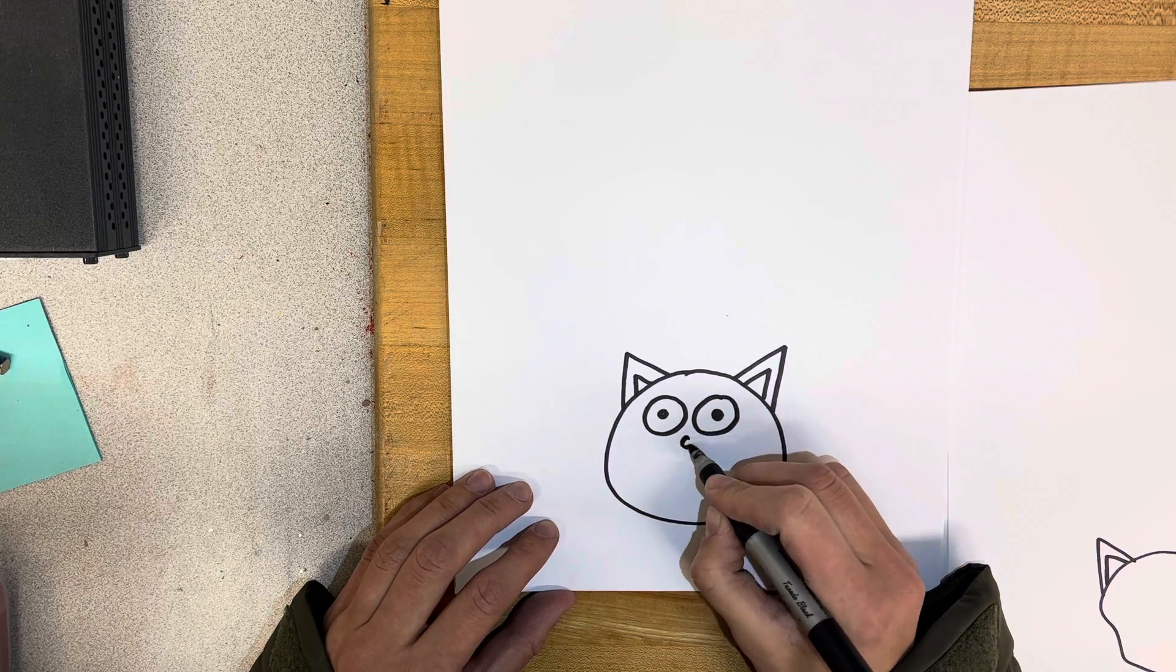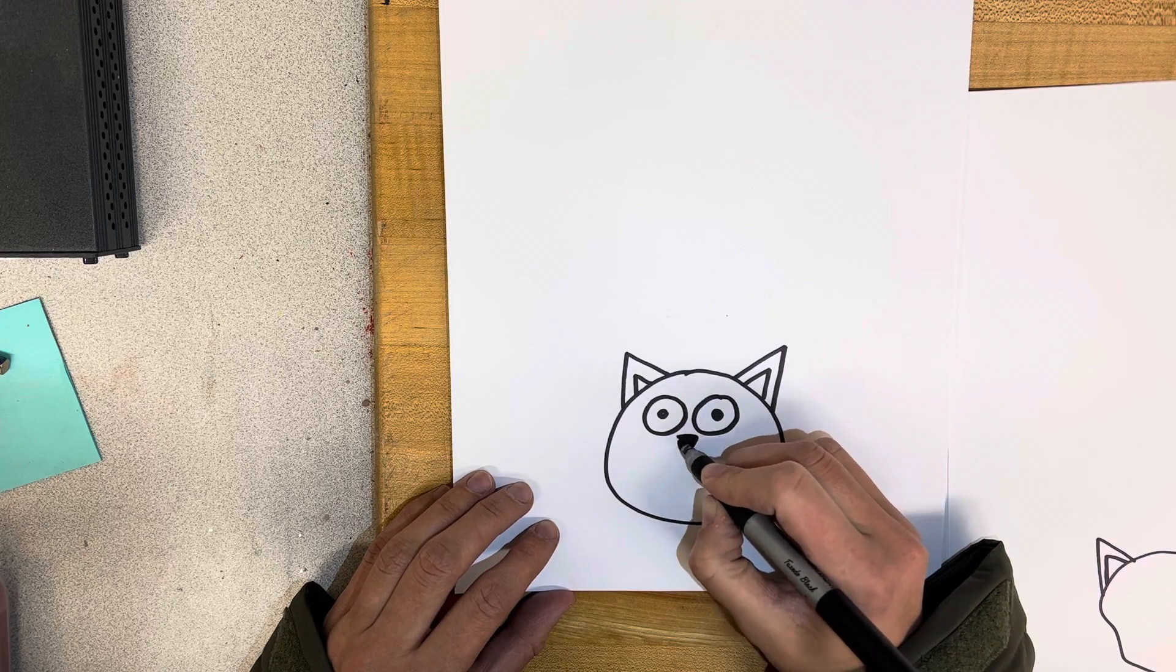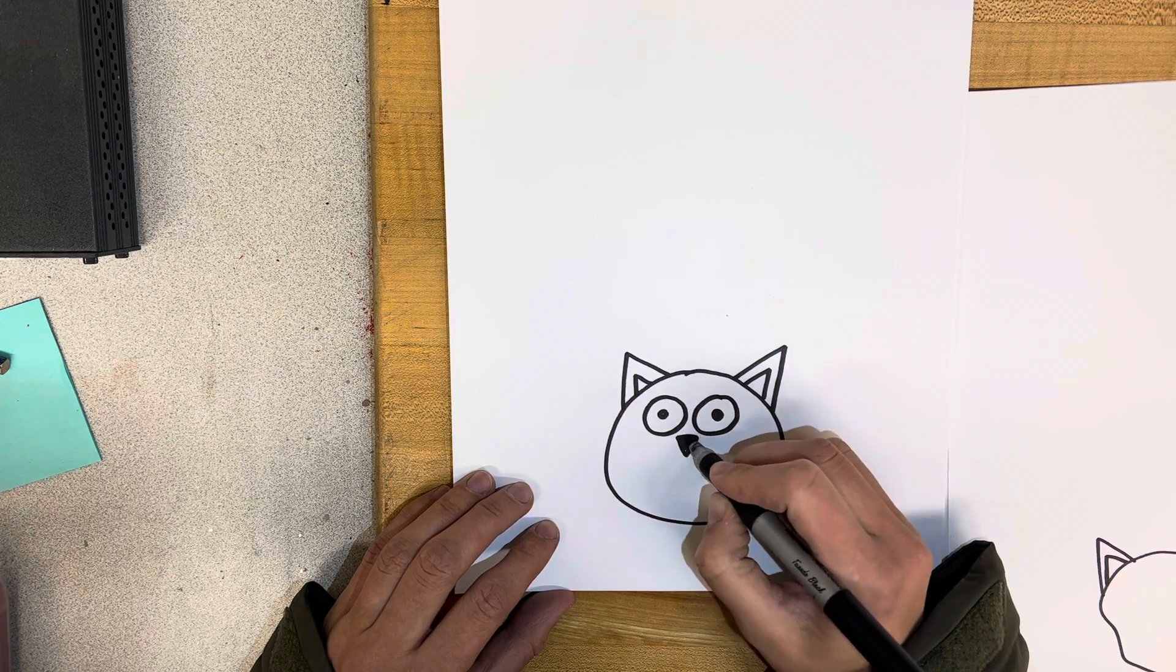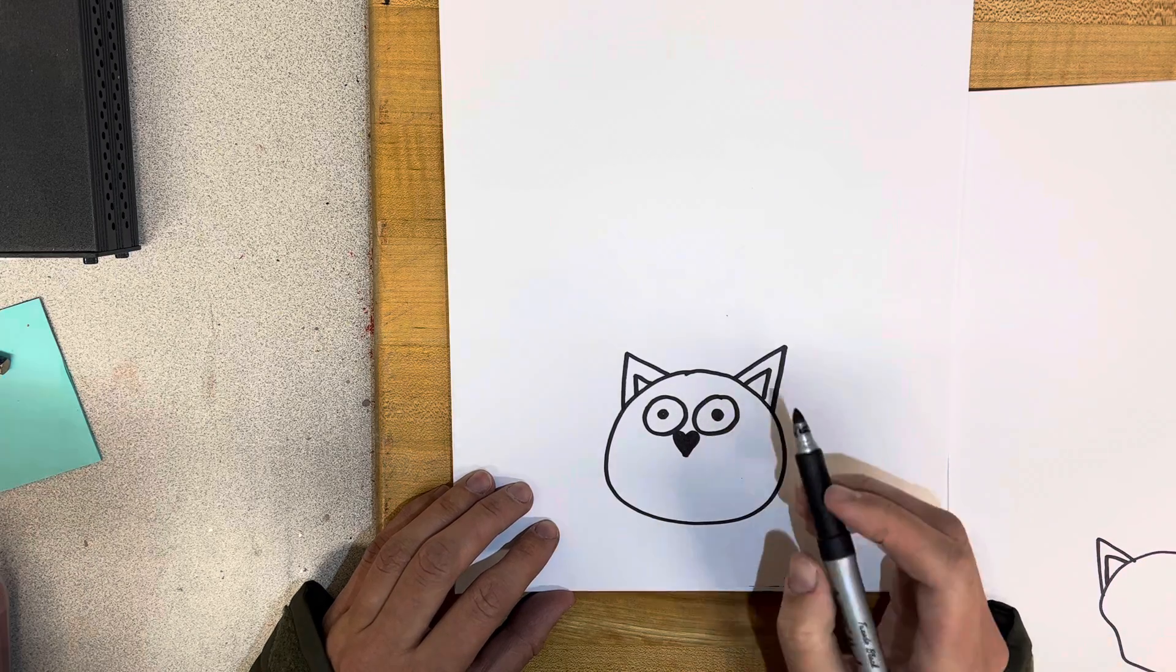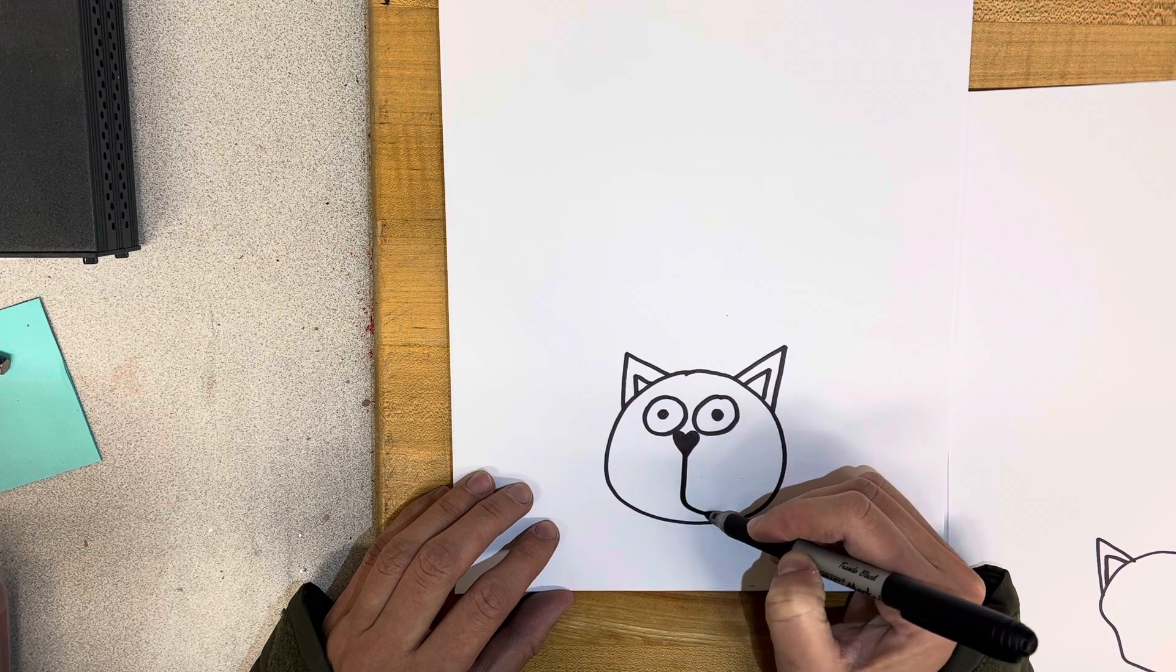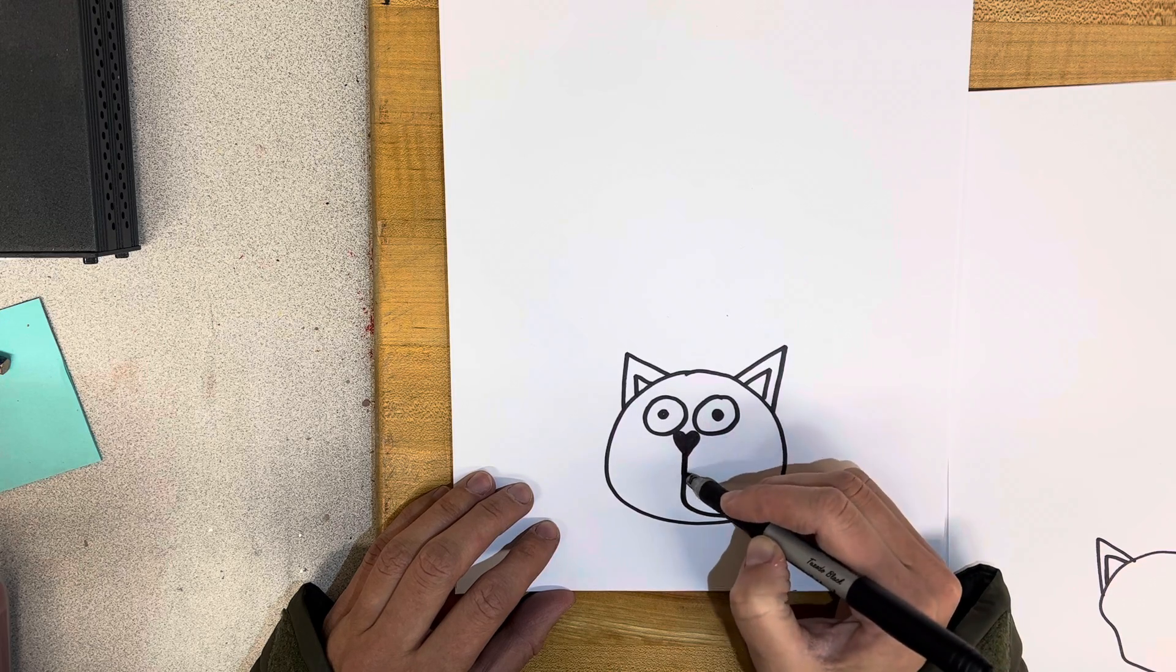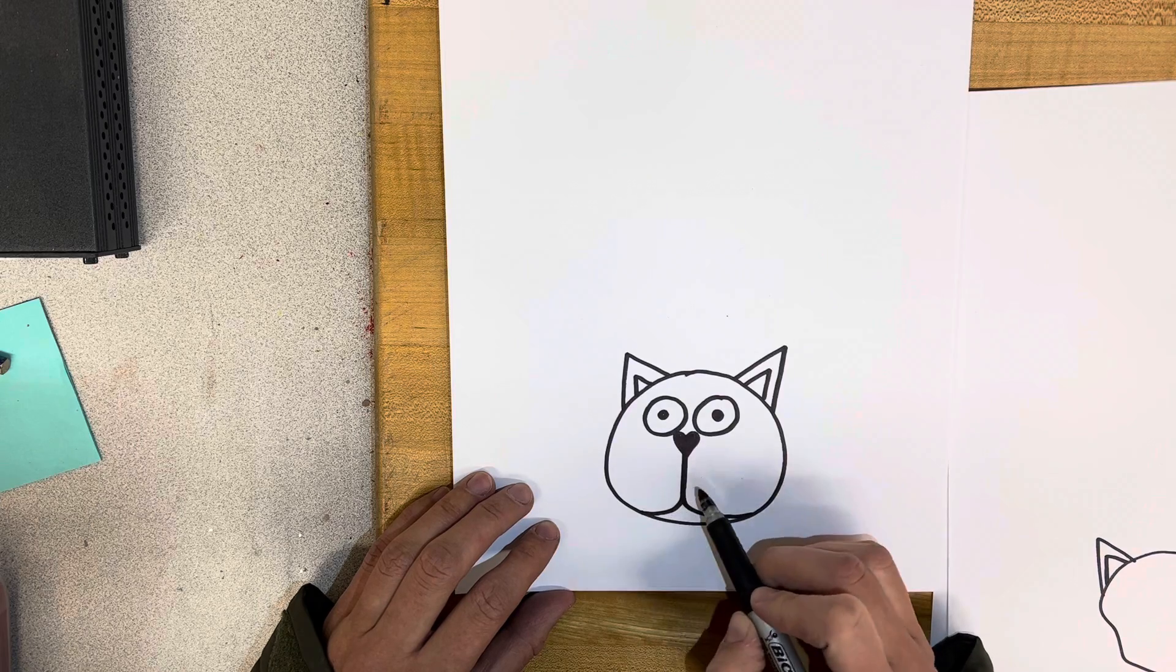And now we're going to do our nose. Again, you can just keep it simple and do a dot, or you could turn it into a triangle, or you could turn it into a heart shape. It's whatever you want to do. And then we're going to have a line that comes way down and then curves off to the side, kind of on both sides here.